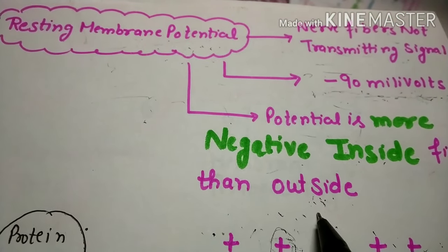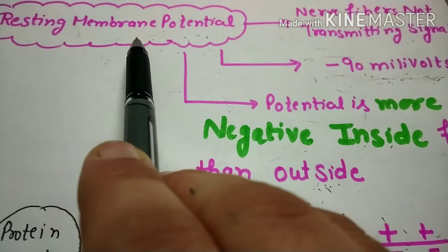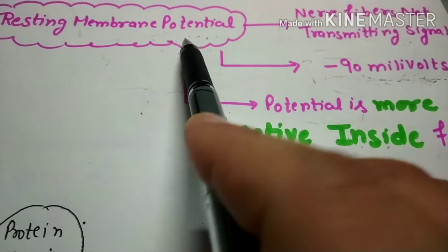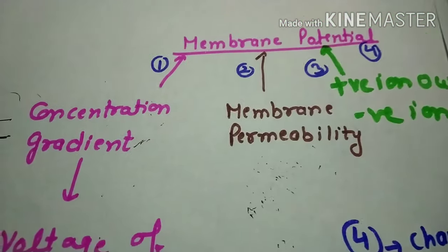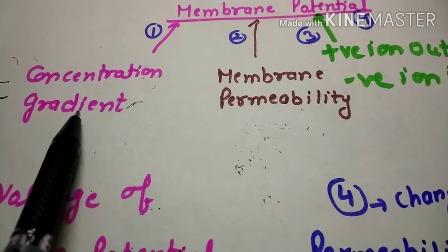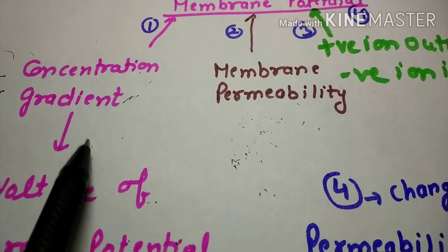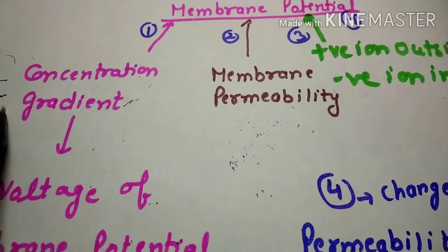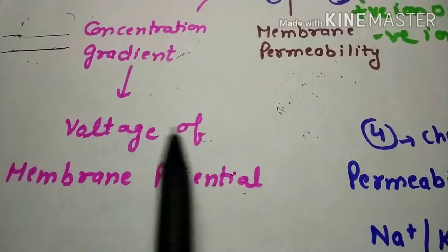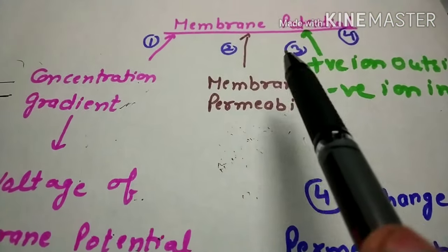Let's proceed step by step. First we will discuss how this membrane potential came about — what are the factors which bring this membrane potential. So first, we have concentration gradient. Concentration gradient refers to the ionic difference present outside and inside the membrane. Due to this concentration gradient, a voltage is produced — the produce voltage of membrane potential.